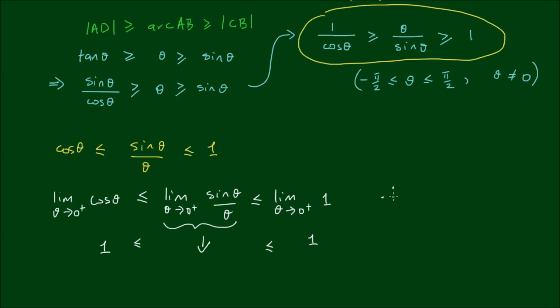So therefore by the squeeze principle or the squeeze theorem the limit as theta approaches 0 from the positive side of sin theta on theta must also be equal to 1. So we say that by the squeeze theorem. Now I mentioned at the start that sin theta on theta is an even function which means it doesn't matter from which side you approach the limit, it is still going to have the same value. So I can get rid of this plus here and just say that the limit as theta approaches 0 of sin theta on theta is equal to 1.